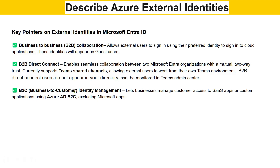The third concept is Business-to-Customer identity management. There could be external consumers using your application — for example, if you have a food delivery app, external consumers and users are using that app. How do you manage their identities, credentials, devices, phone numbers, and email IDs? This is handled through Azure AD B2C (Business to Customer), which lets businesses manage customer access to SaaS apps or custom applications — excluding Microsoft apps — so your own externally-facing apps.